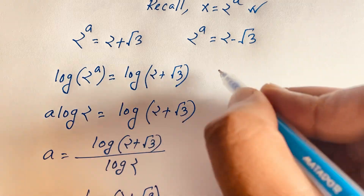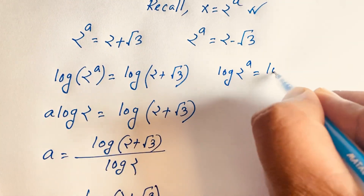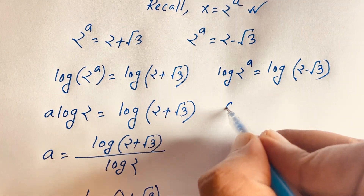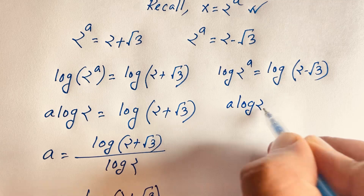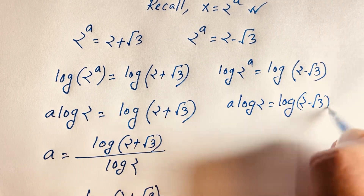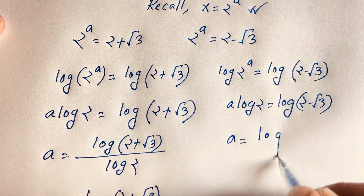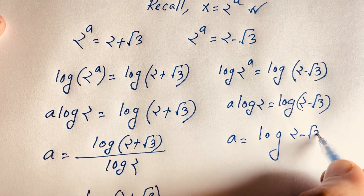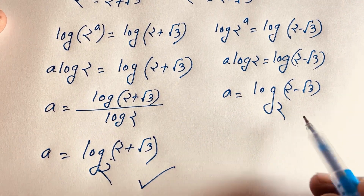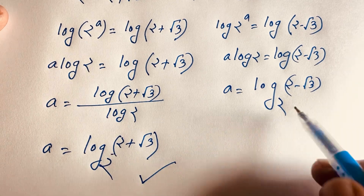For the second case, 2^a = 2 − √3. Taking the log of both sides: a·log 2 = log(2 − √3), so a = log(2 − √3) / log 2, which is a = log base 2 of (2 − √3). This is our second value of a.